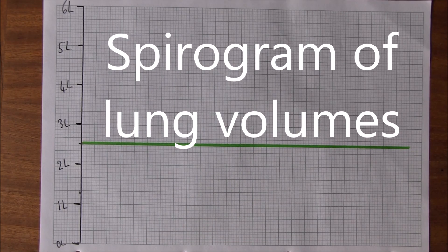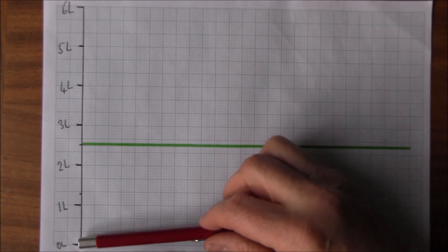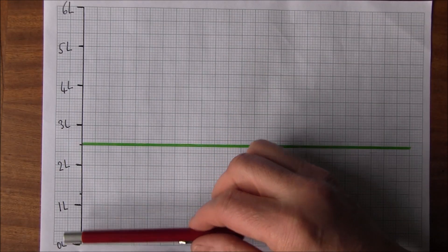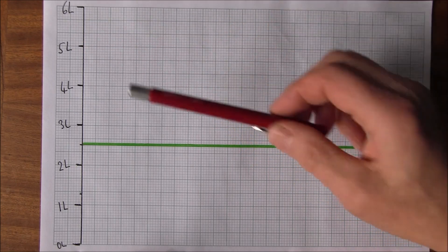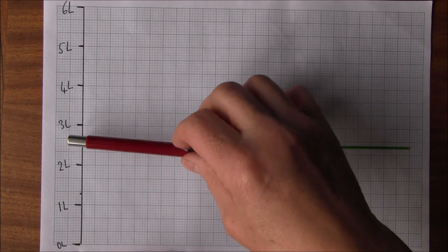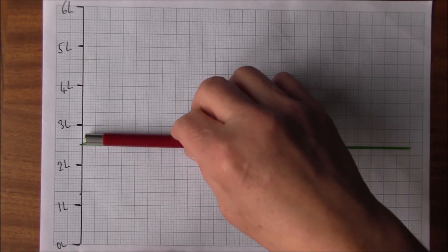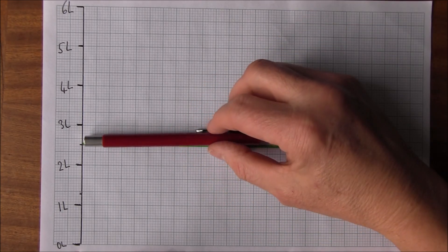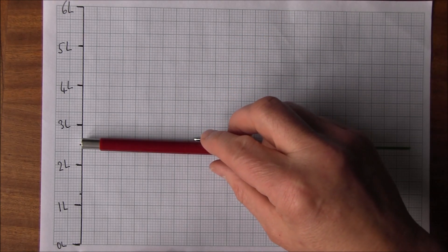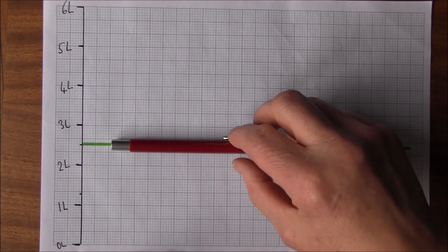We want to generate a spirogram to illustrate lung and breathing volumes. Here we have the volume of air in the lungs from zero to six liters. This green line represents the situation when the chest is at rest — when we are not making an effort to breathe in or out. That is a state of relative muscular rest.